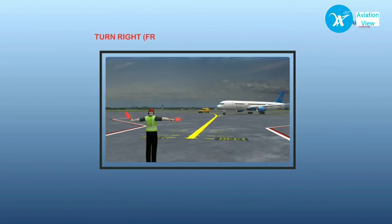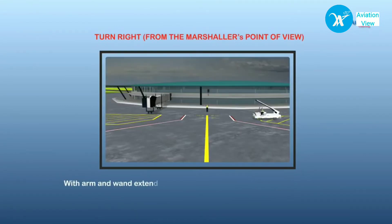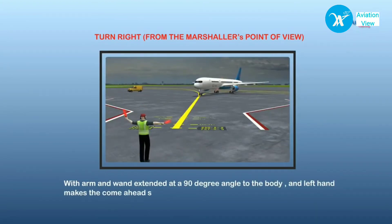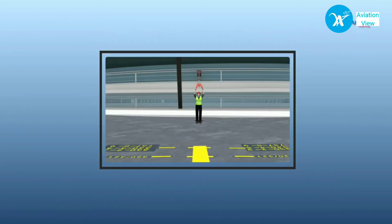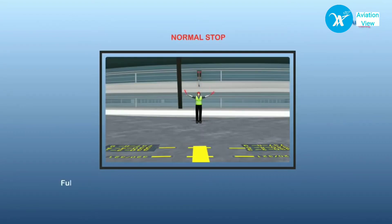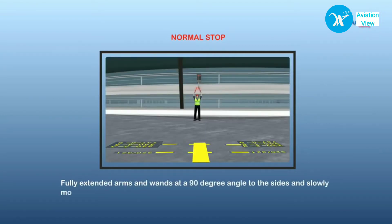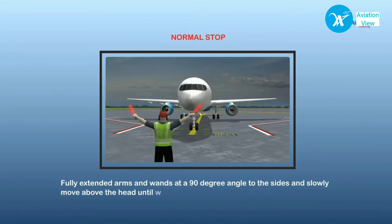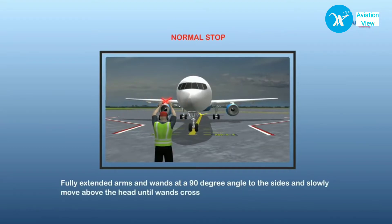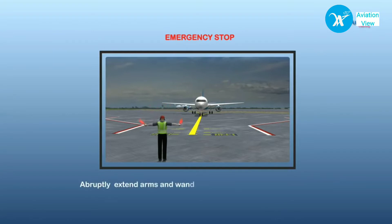When the marshaller wants the aircraft to turn right from his point of view, with the wand extended at a 90-degree angle, he makes a signal with his left hand to come ahead. For a normal stop, the marshaller extends his arms and wands fully at a 90-degree angle to his sides and slowly moves them above the head until the wands cross.